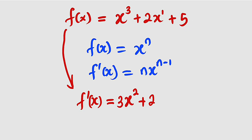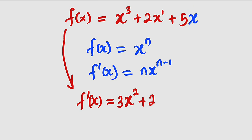Why does differentiating a constant give 0? Because naturally it has x to the power of 0 attached. You know x to the power of 0 is 1, and 1 times that constant is still the constant. The moment this 0 drops down to multiply, everything will be equal to 0. This is why whenever you differentiate a constant, you get 0.